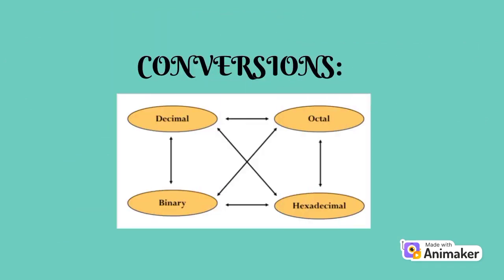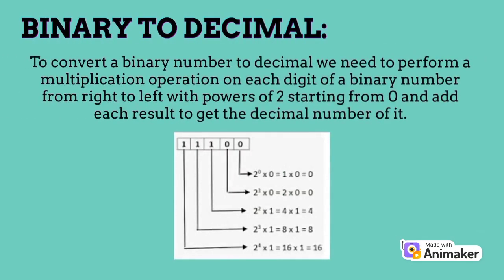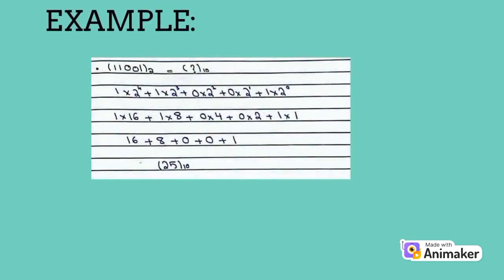Here is the chart showing the conversions. Binary to decimal: to convert a binary number to decimal, we need to perform a multiplication operation on each digit of a binary number from right to left with powers of 2 starting from 0, and add each result to get the decimal number. Here is an example.